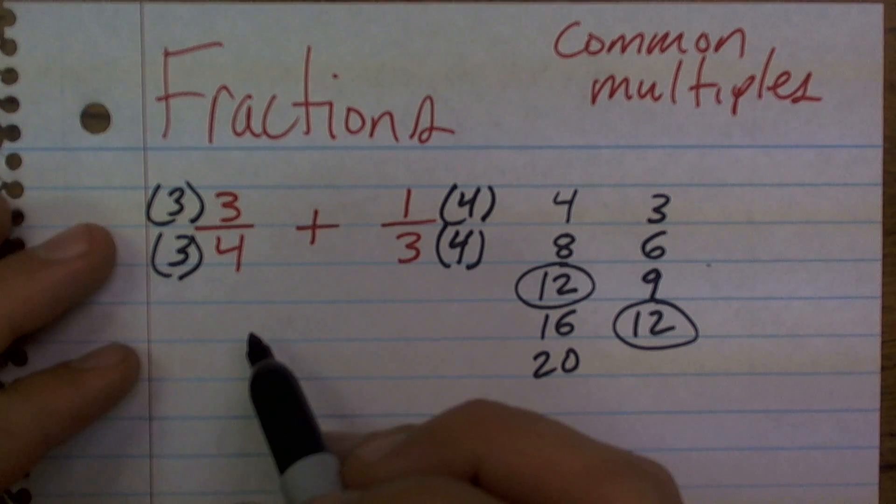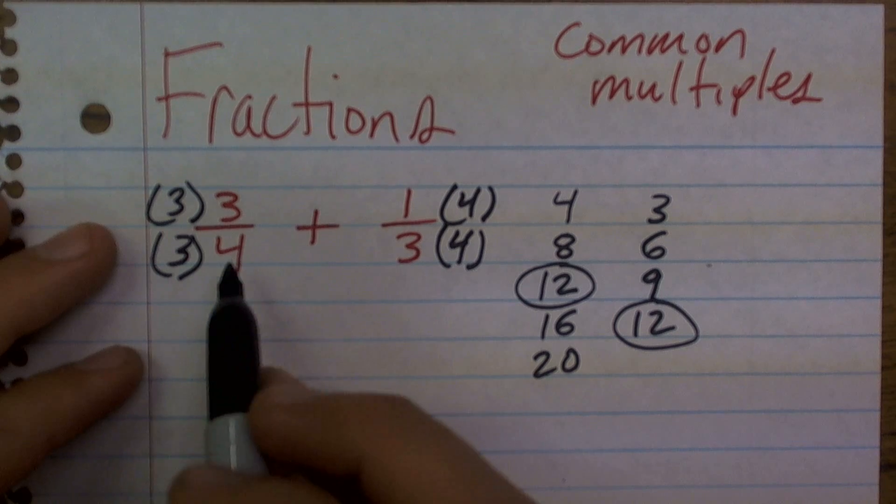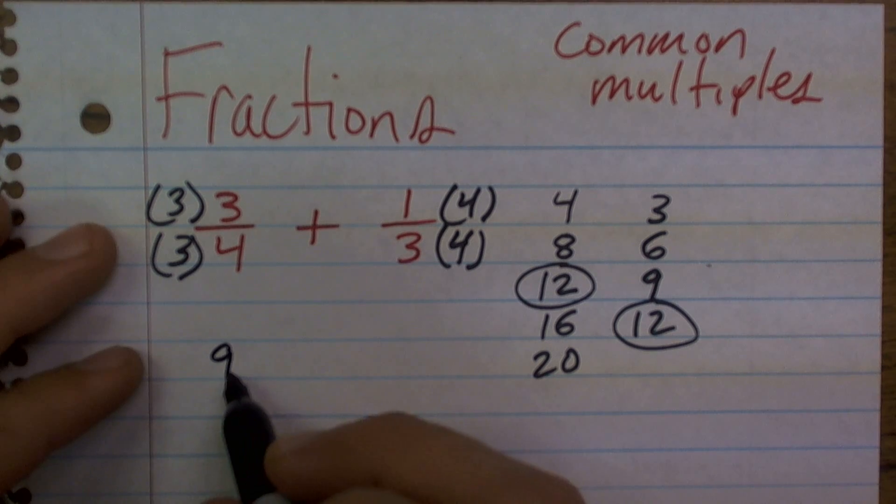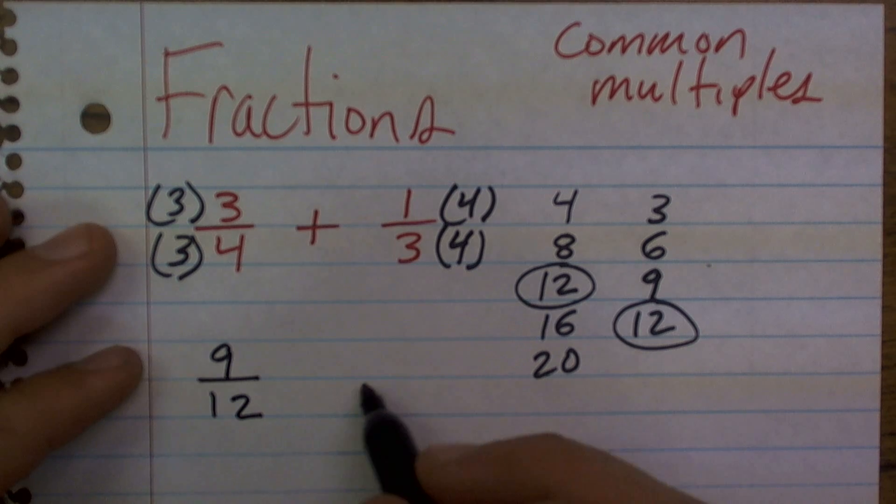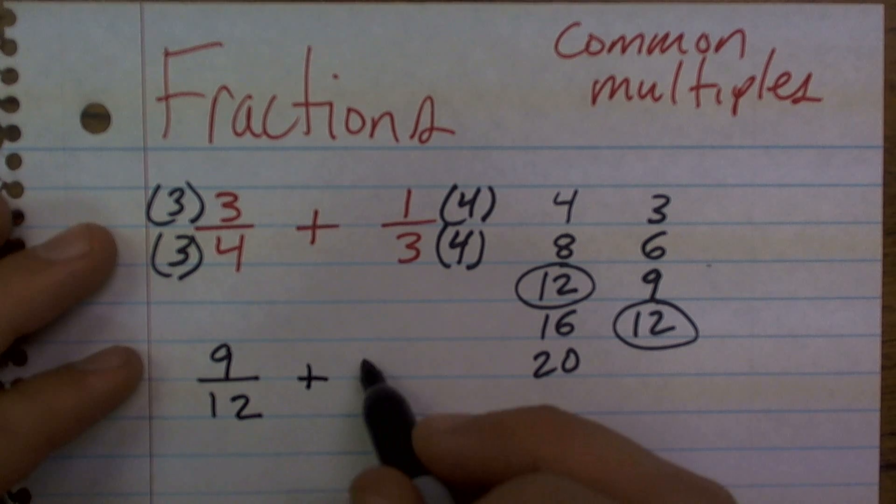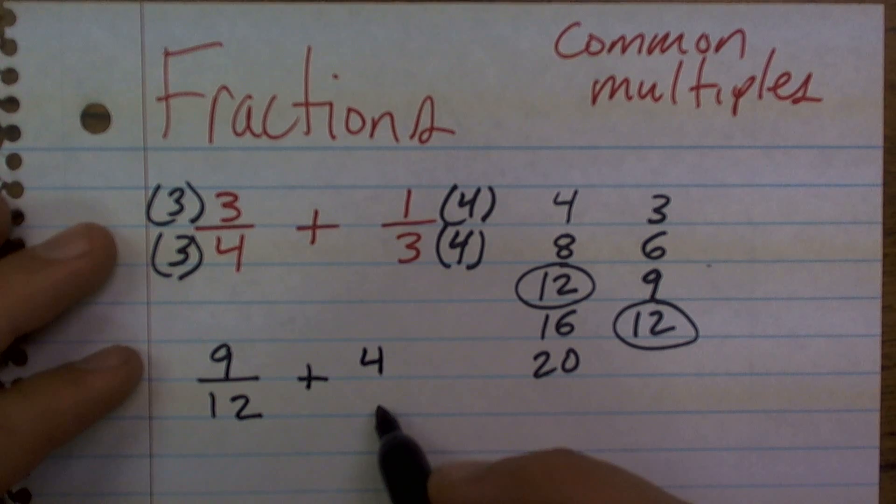So now what I'll do is I just simply multiply across. 3 times 3 is going to give me 9, and 3 times 4 is going to give me 12. 1 times 4 is going to give me 4, and 3 times 4 is going to give me 12.